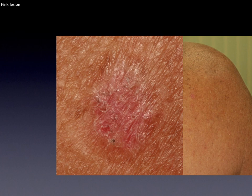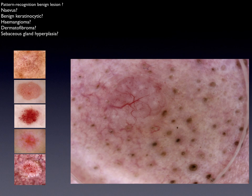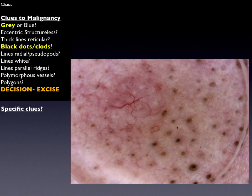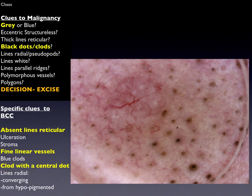Here we have a pink lesion on the posterior shoulder — a subtle lesion we cannot recognize as one of the five common benign lesions. It's pigmented, so we apply chaos and clues: it's asymmetrical, chaotic, with clues to malignancy of gray structures and black dots and clods peripheral. We excise and look for specific clues: absent lines reticular, fine linear vessels, and clods with a central dot. Note we don't say branched or arborizing vessels, because those can be seen in benign cysts and any lesion displacing the dermal plexus — but fine linear vessels are a consistent clue to basal cell carcinoma. In this case they are linear serpentine. Again, basal cell carcinoma.